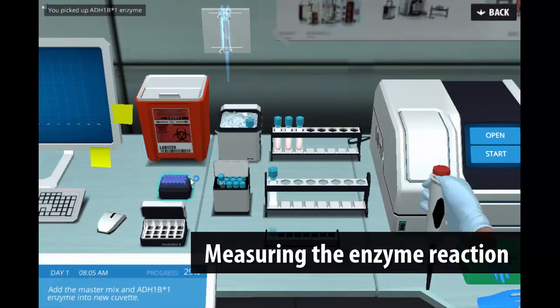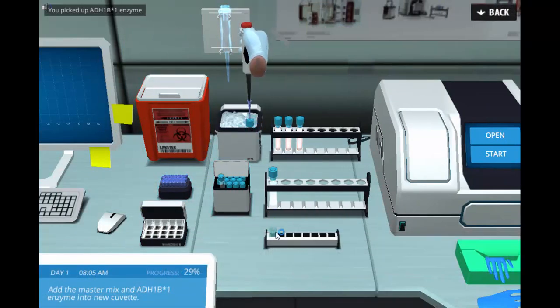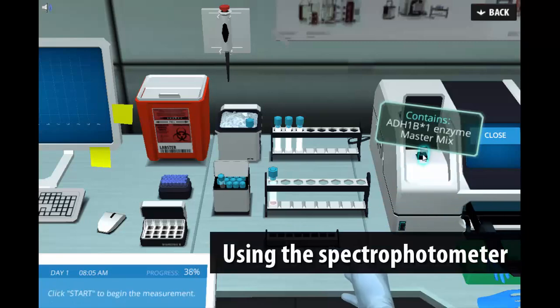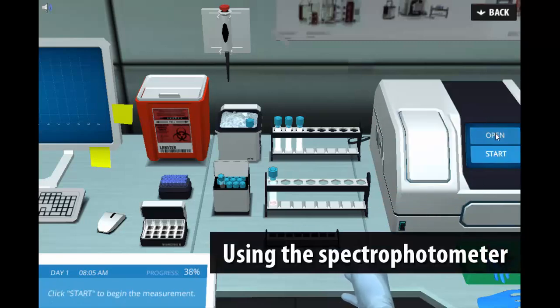Students learn about how to prepare a master mix and how to calculate dilution. Students prepare a reaction in a one milliliter cuvette and measure the amount of product formed using the spectrophotometer.